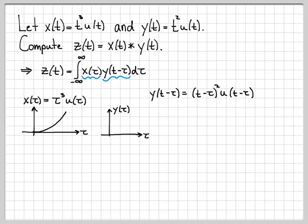So I do this in a sequence of steps. Tau is the time variable that I'm integrating across, so I start by sketching y of tau. So what does y of tau look like? It almost looks like x of tau, except instead of going up at a rate of tau cubed, it goes up at a rate of tau squared, and it's 0 everywhere here because the unit step function has turned everything off.